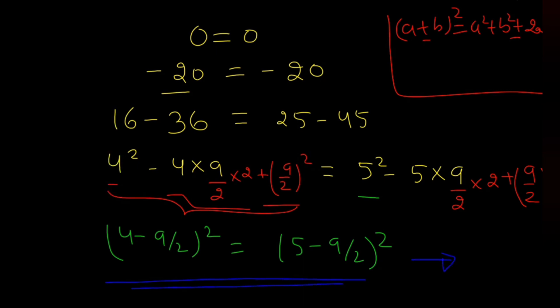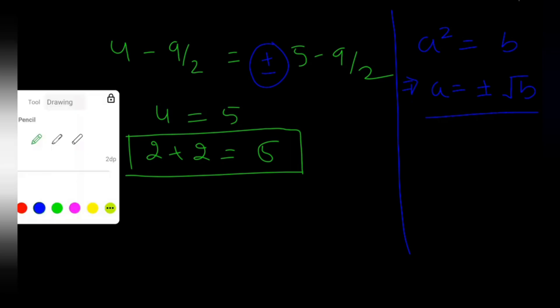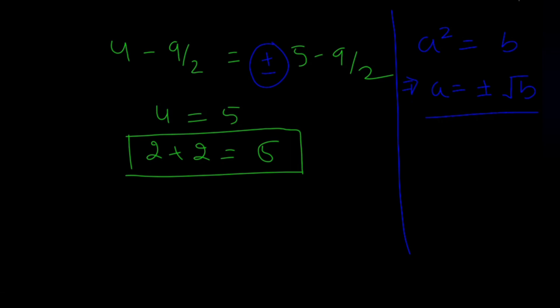When I took root on both sides, let me show you. If a squared is equal to b, which implies, what does this mean? This means that a equals plus minus root b, which plus minus I have skipped here. So if I take plus minus, then what will happen? Let me show you. If I take 4 minus 9 by 2 equals plus minus of 5 minus 9 by 2.